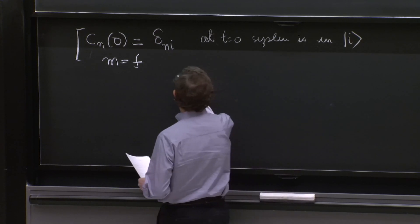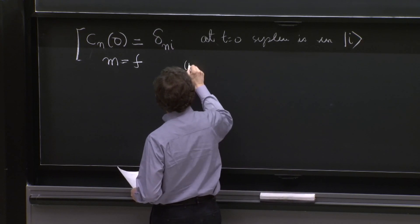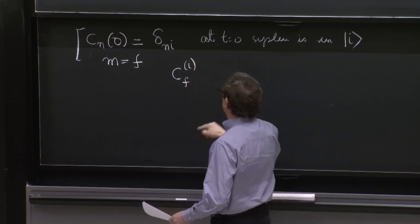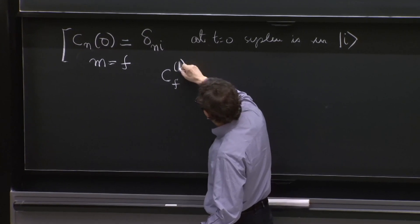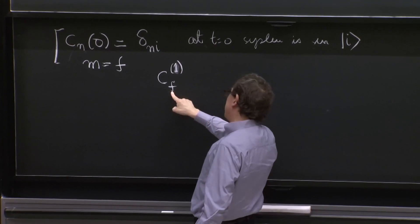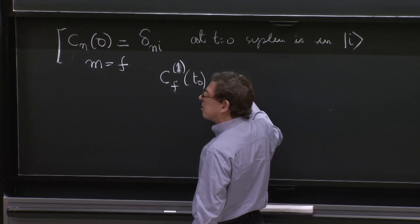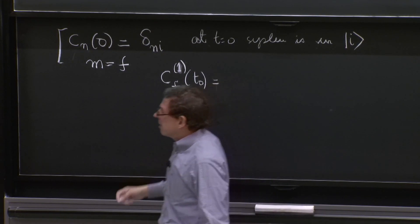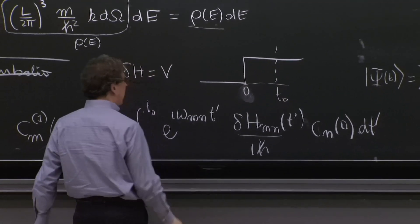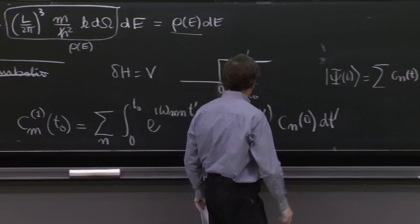With these two facts, the formula becomes cf, the amplitude to first order in perturbation theory, to have to be in the state f at time t naught.